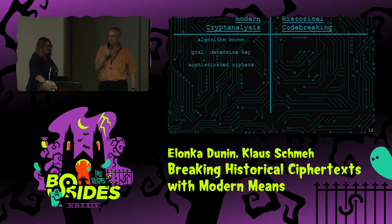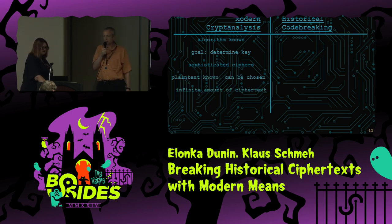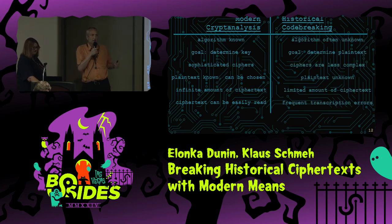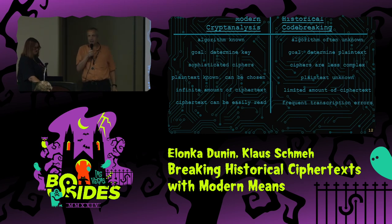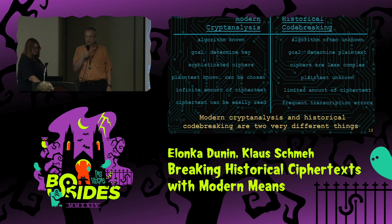In modern cryptanalysis, the algorithm is known, the goal is to determine the key, we are dealing with sophisticated ciphers, the plaintext is known or can even be chosen, we have an infinite amount of ciphertext, and the ciphertext can be easily read. But today we are talking about the classical case, where everything is different: usually the algorithm is not known, and the goal is not to determine the key, but the plaintext. To summarize: modern cryptanalysis and historical codebreaking are two very different things.